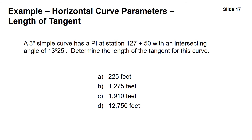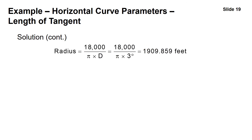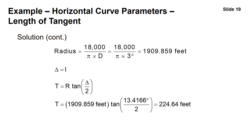Given the same information, we find the tangent length. The radius is 1909.859 feet, and delta equals the intersecting angle I. Using T equals R times the tangent of delta divided by 2, we get T equals 1909.859 times the tangent of 13.4166 degrees divided by 2, giving a tangent length of 224.64 feet — answer A.